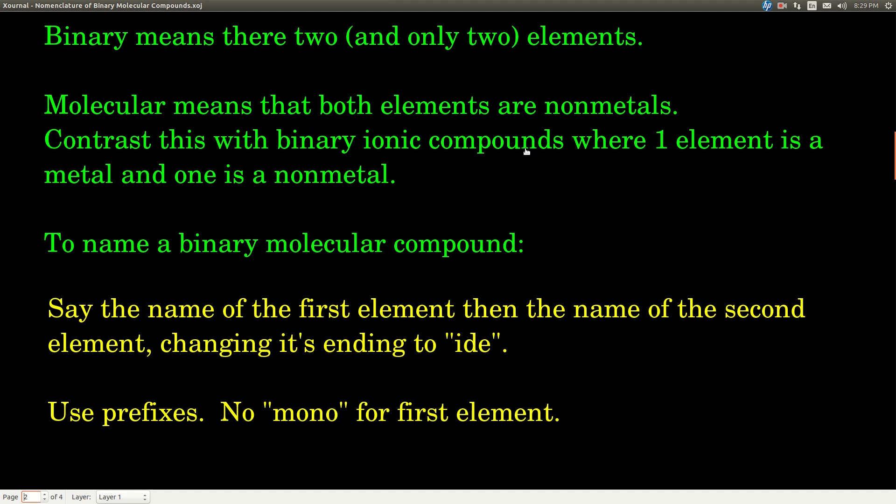To name a binary molecular compound, all you do is say the name of the first element and then say the name of the second element, changing its ending to IDE.